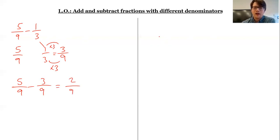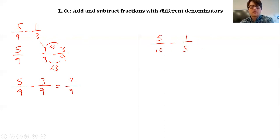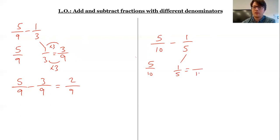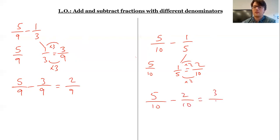One more example. Let's do five tenths subtract one fifth. Again, I'm trying to make these denominators the same. Five goes into ten, so ten is going to be my lowest common denominator. So five tenths can stay as it is. One fifth — I need to find the equivalent fraction that has a denominator of ten. I've times by two here, times by two at the top. So one fifth is the same as two tenths. Five tenths subtract two tenths gives me an answer of three tenths.